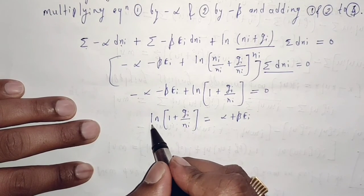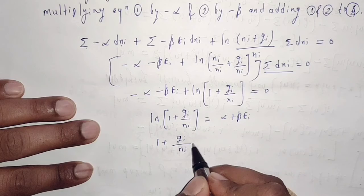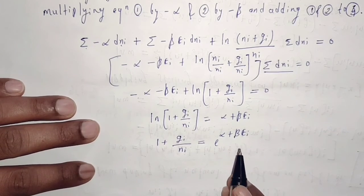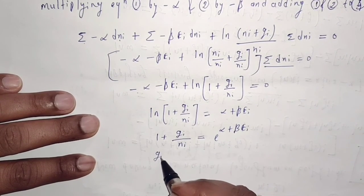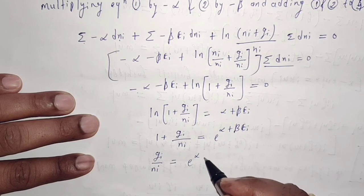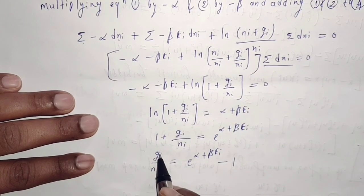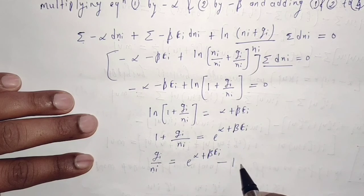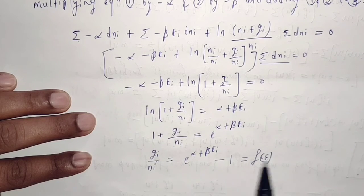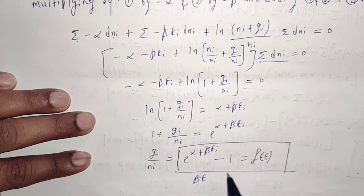Removing the logarithm: 1 + gi/ni = e^(alpha + beta·ei). Therefore gi/ni = e^(alpha + beta·ei) - 1. This ratio gi/ni gives the distribution function, which we represent as f(e) — the Bose-Einstein statistics distribution function.